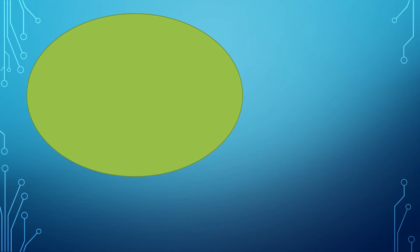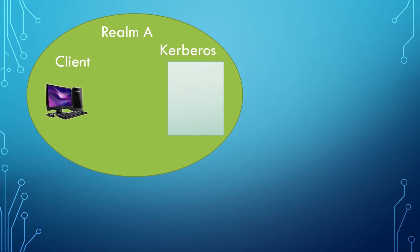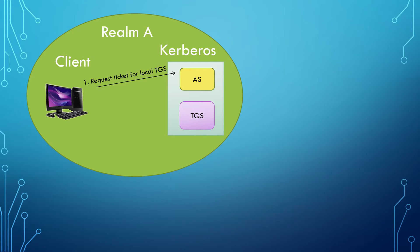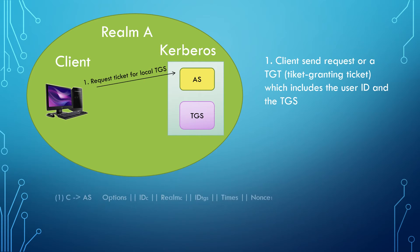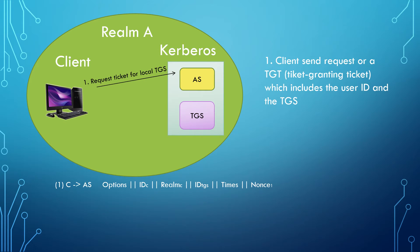Now we look at a sample process. In Realm A, the AS is the authentication server and TGS is the ticket granting server. The client sends a request for a TGT, ticket granting ticket, which includes the user ID and the TGS.